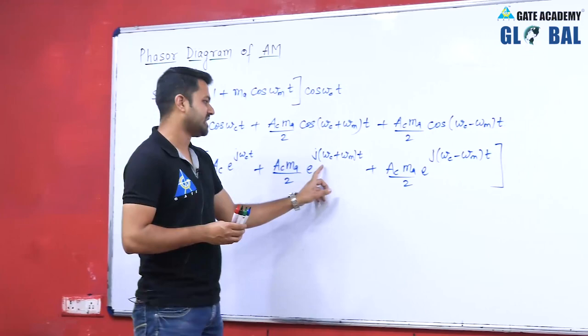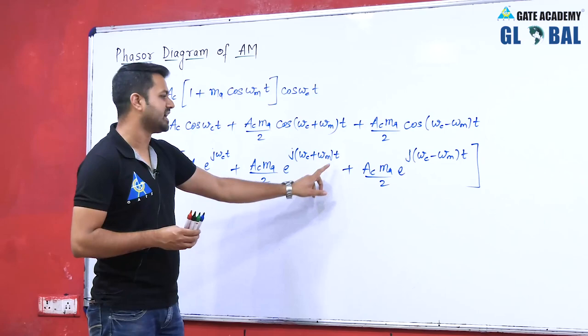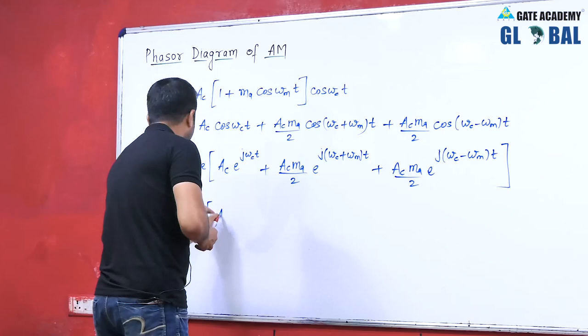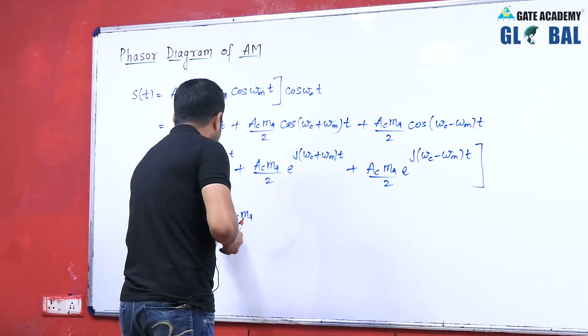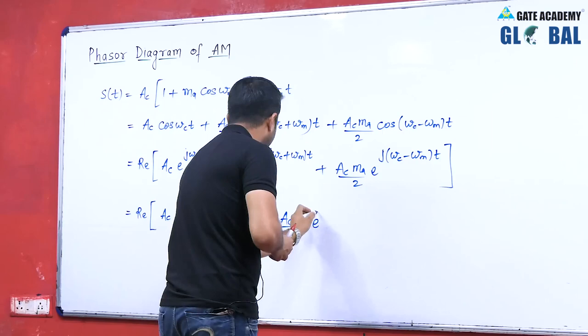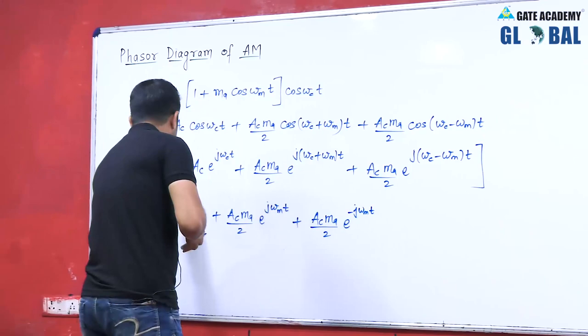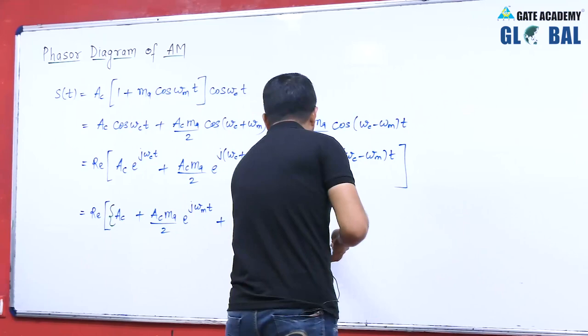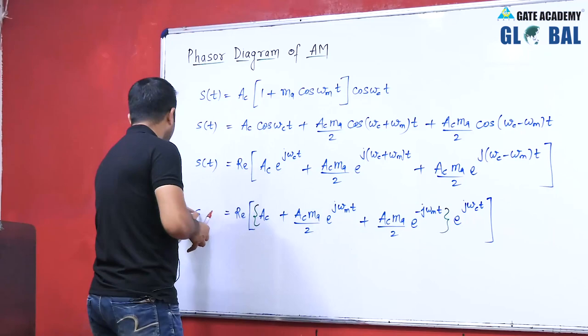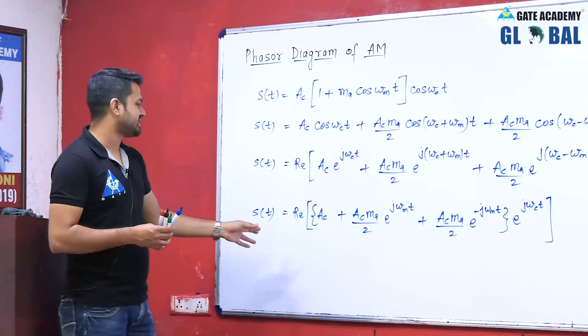Separating the carrier frequency, we get: real part of [Ac + Ac·Ma/2·e^(jωmt) + Ac·Ma/2·e^(-jωmt)] all multiplied by e^(jωct). So S(t), which is an amplitude modulated signal, is a band-pass signal represented as the real part of some term multiplied by e^(jωct).